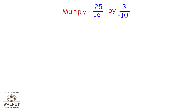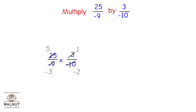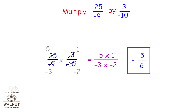Multiply 25/(-9) by 3/(-10). That is 25/(-9) × 3/(-10), which equals 5×1 / (-3×(-2)) = 5/6.